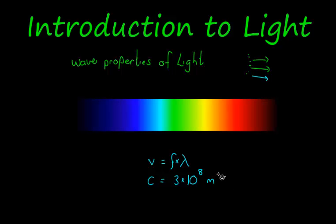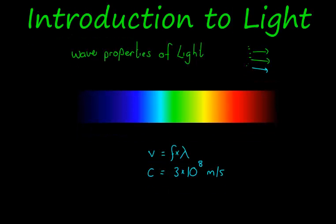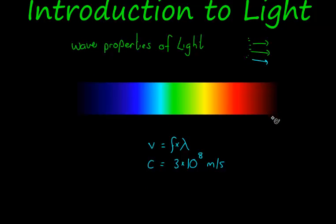3 times 10 to the power of 8 meters per second. That is 300 million meters per second. I think that's about seven times around the earth in one second—that is incredible. So that is the speed. This is called the speed of light, the speed of light waves.